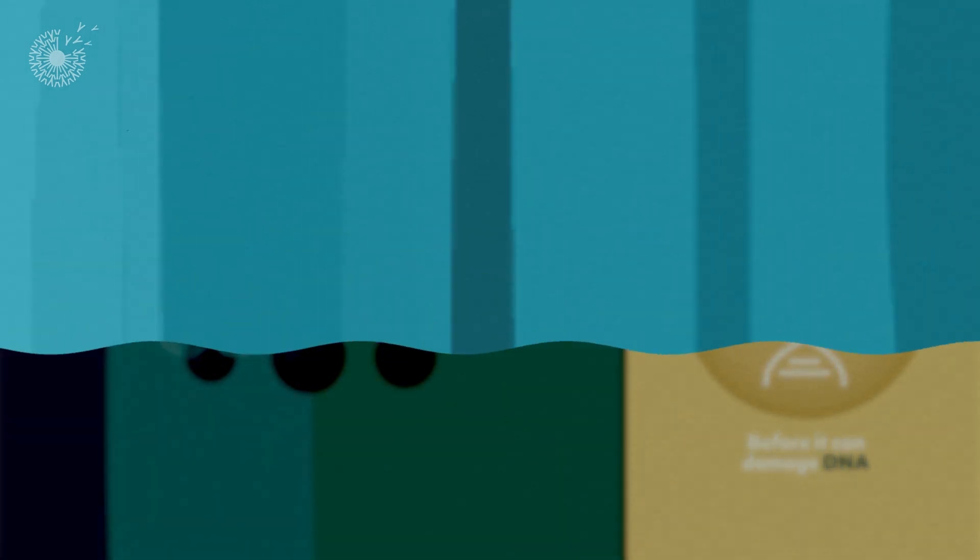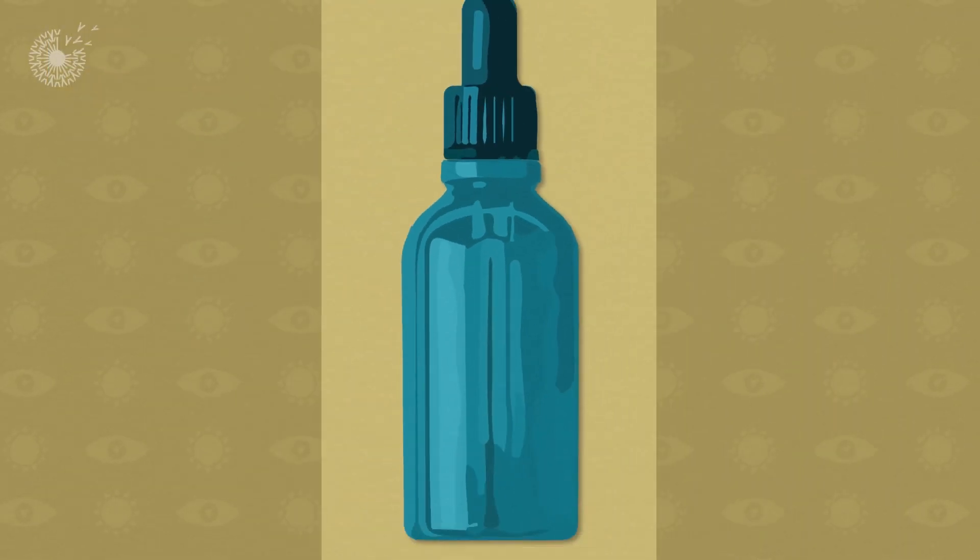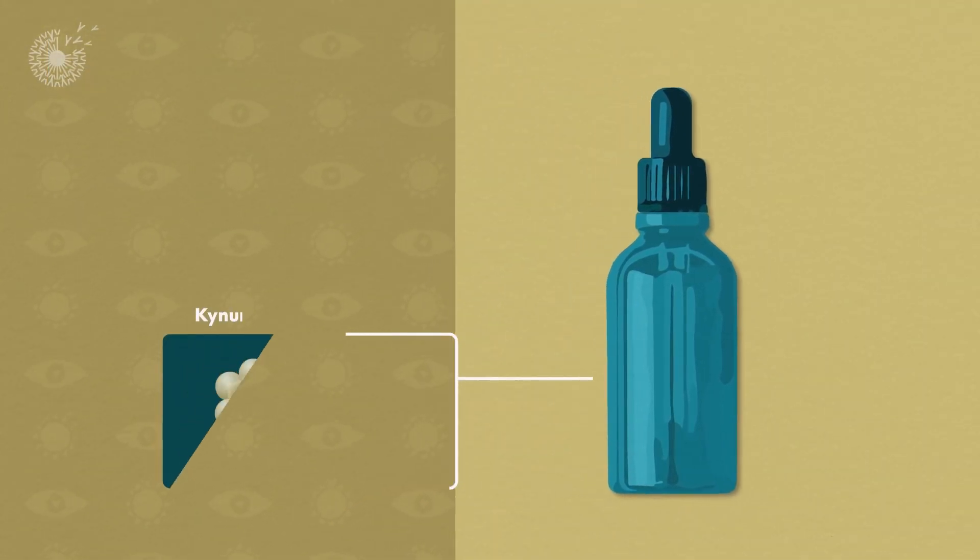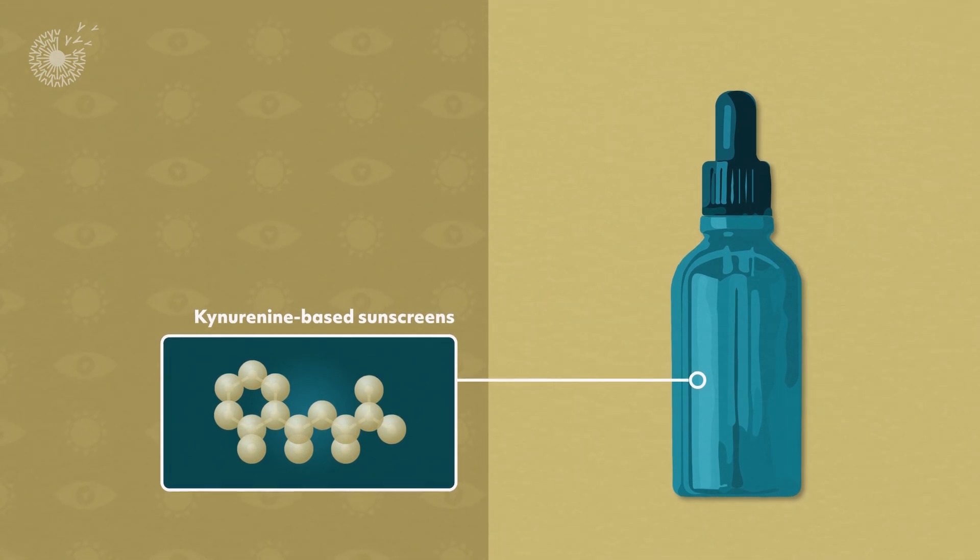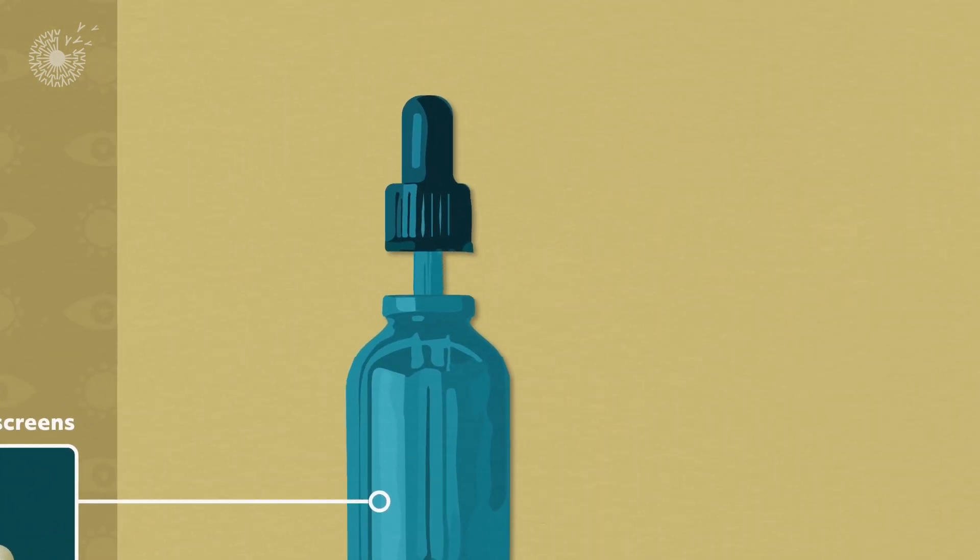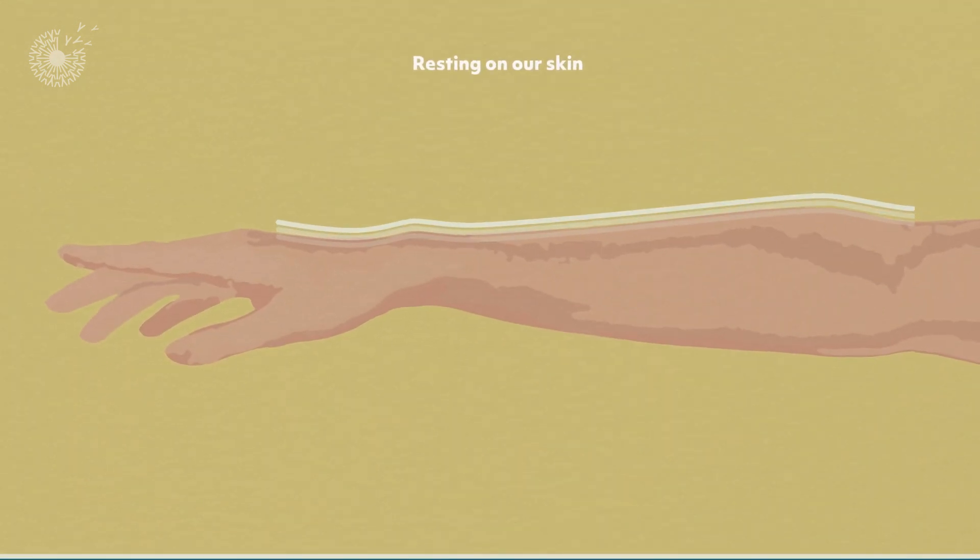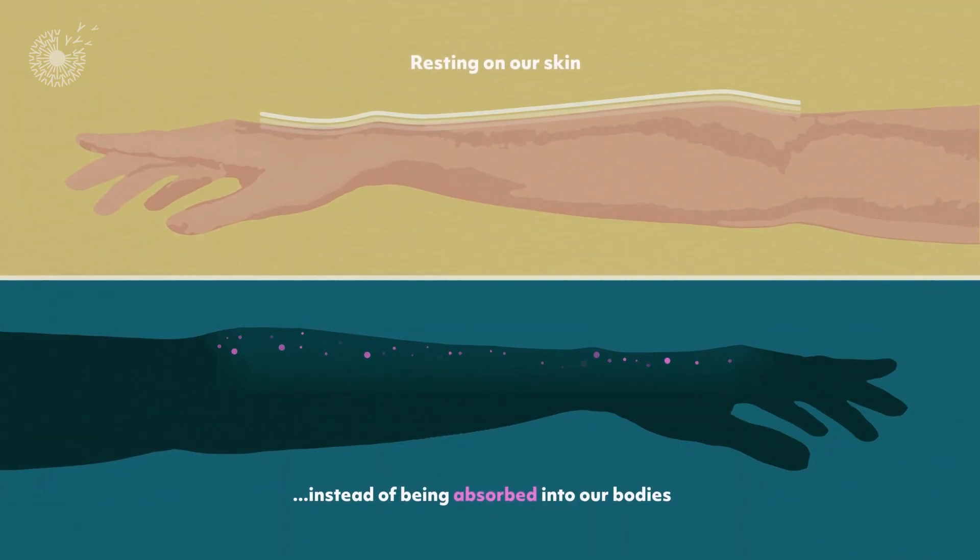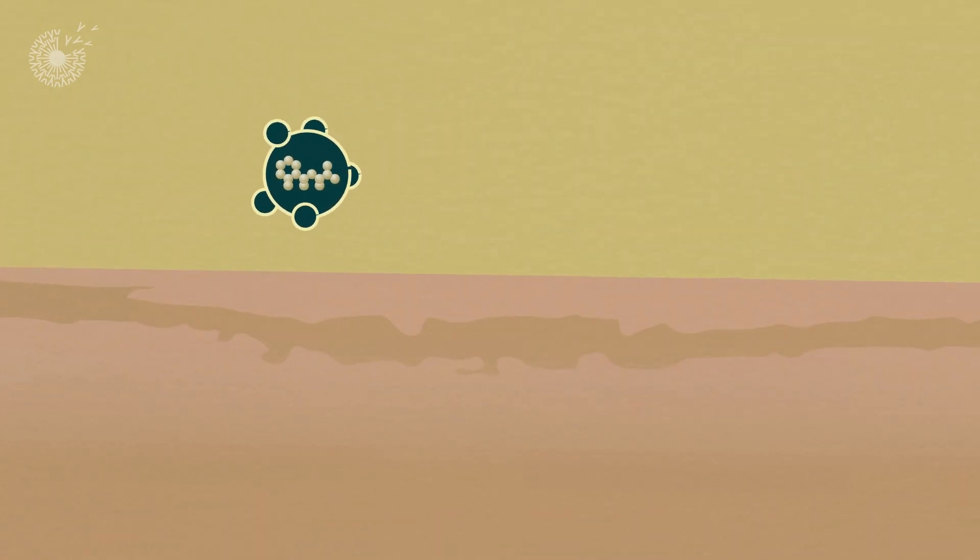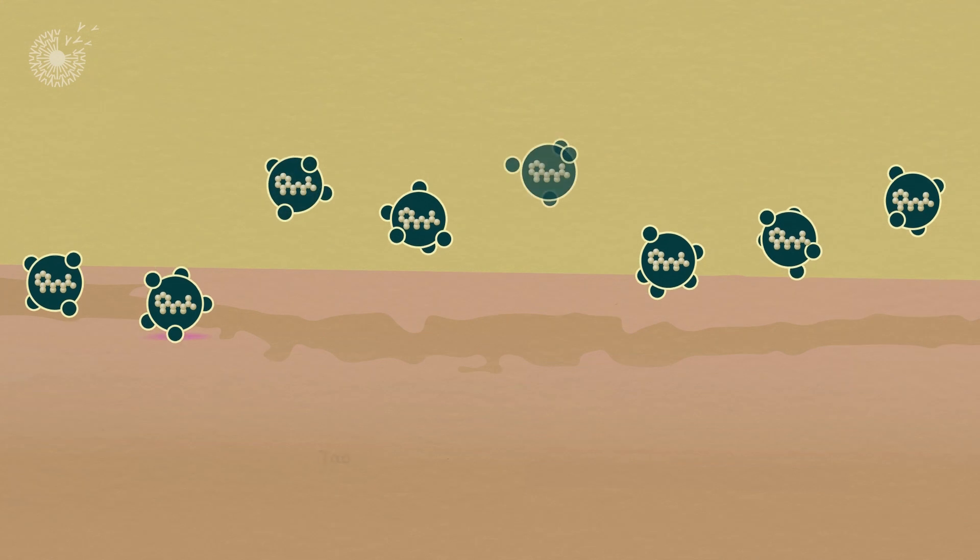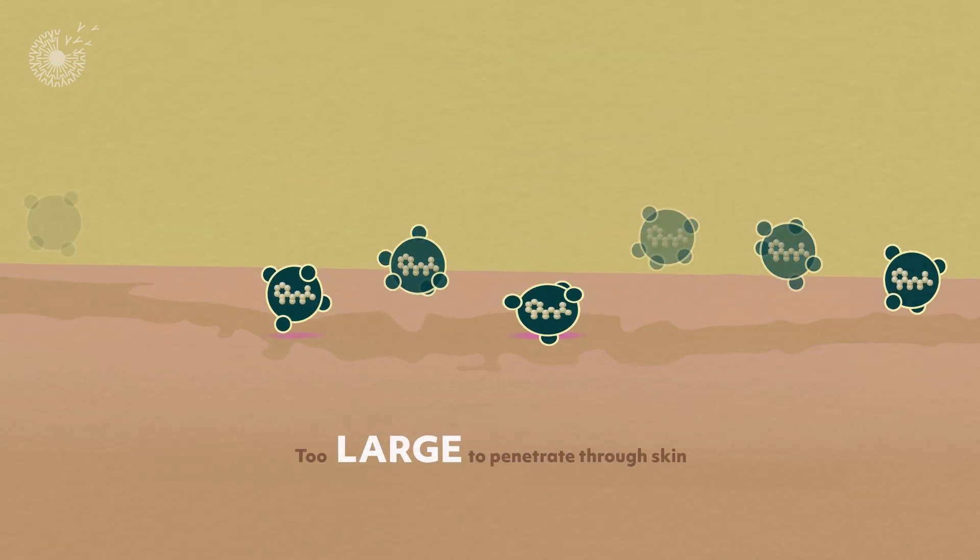Inspired by this natural process, researchers at a company called Solium are producing kynuranine-based sunscreens. To keep these sunscreen molecules where they will be most protective, resting on our skin instead of being absorbed into our bodies, researchers at Solium attach additional bio-inspired compounds to the kynuranines to build molecules that are too large to penetrate through skin.